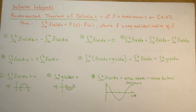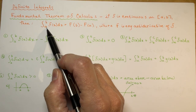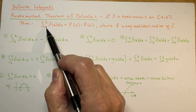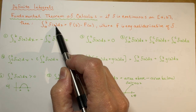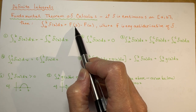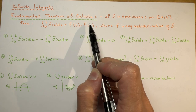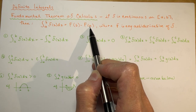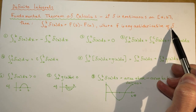So what it says is that if a function is continuous on the interval [a, b], then the definite integral — it's definite now because it has boundaries — from a to b of the function with respect to x is the antiderivative evaluated at b minus the antiderivative evaluated at a, where F is any antiderivative of f.